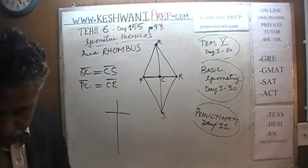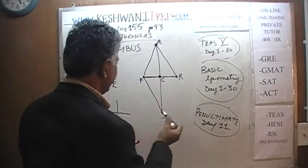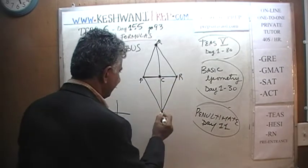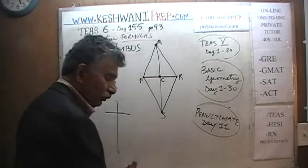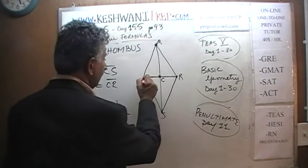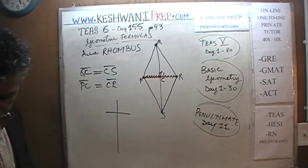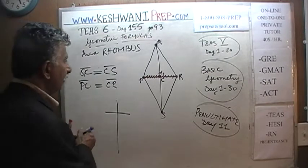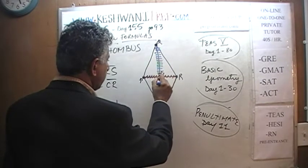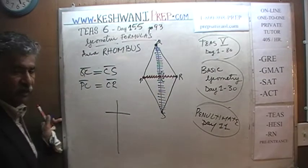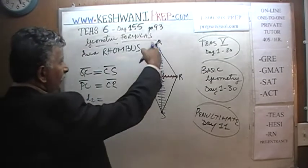In this picture you will see that we have two diagonals. Diagonals are lines that join opposite points. The first diagonal is P to R — let's call it D1. The second diagonal is Q to S — let's call it D2. So we have two diagonals: D1 is P to R, and D2 is Q to S.